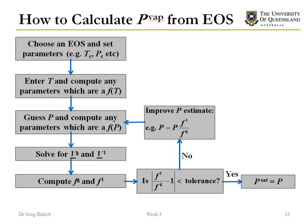So to start with I've got to choose my equation of state and get my parameters, so my critical parameters. And then if I'm calculating vapor pressure for a particular temperature then I would need to enter my temperature into my equation, solve for anything that's a function of temperature. So this would be something like the alpha term in the Peng Robinson equation of state. Then my next step is to guess a pressure and then calculate any parameters that are a function of pressure.